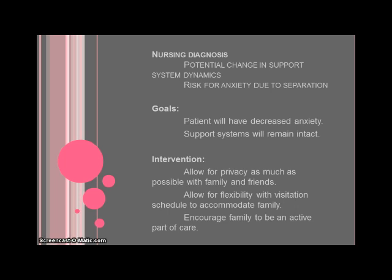So let's set some goals with the patient and encourage some quality time with family and friends that can allow a continued success rate. For interventions, we're going to allow for privacy, allow for flexibility with visitation schedule and accommodate the family, and we want to encourage her family and loved ones to be an active part of care.